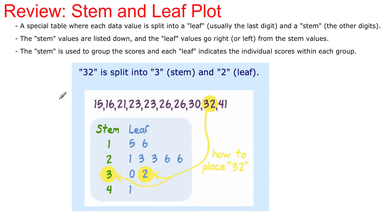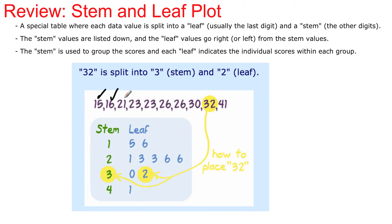Next is the stem and leaf plot. The best way to describe it: take the number 32 — it's split into 3, which is the stem, and 2, which is the leaf. Here are your ordered numbers — in the tens: 10, 15, 16; and in the 20s: 21, 23, 23, 21, 23, 23.